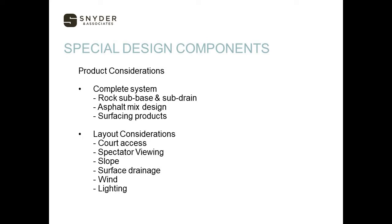Other items we'll want to discuss include court access — how are people getting there, where are spectators going to sit to view matches, what type of slope we're having on the courts, and what's the surface drainage. We really don't want a hillside draining onto our tennis courts. Water is one of the main issues we're dealing with — the fluctuation of courts and getting cracks. We also consider wind and lighting, as it's nice to provide that amenity for a city or school to play in the evening.